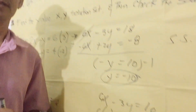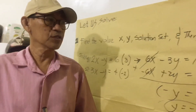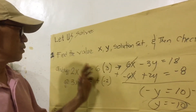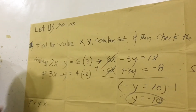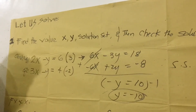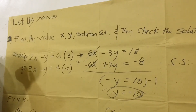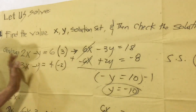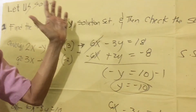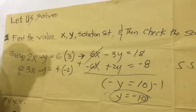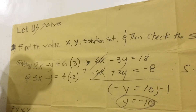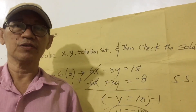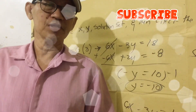That concludes our computation. I hope you learned the elimination method through this example — specifically, what to do when there is no variable to eliminate immediately. We look for a number to multiply so that we get a new equation, and then we proceed from there. Don't forget to subscribe, like, and share.